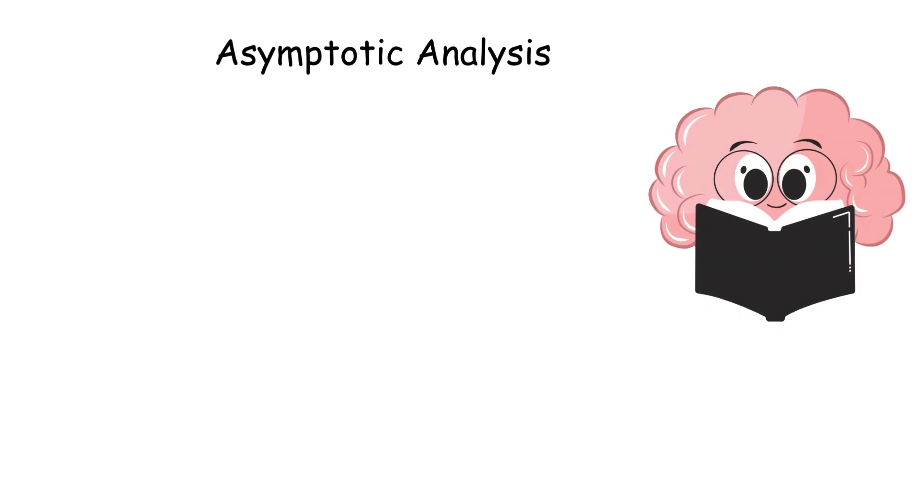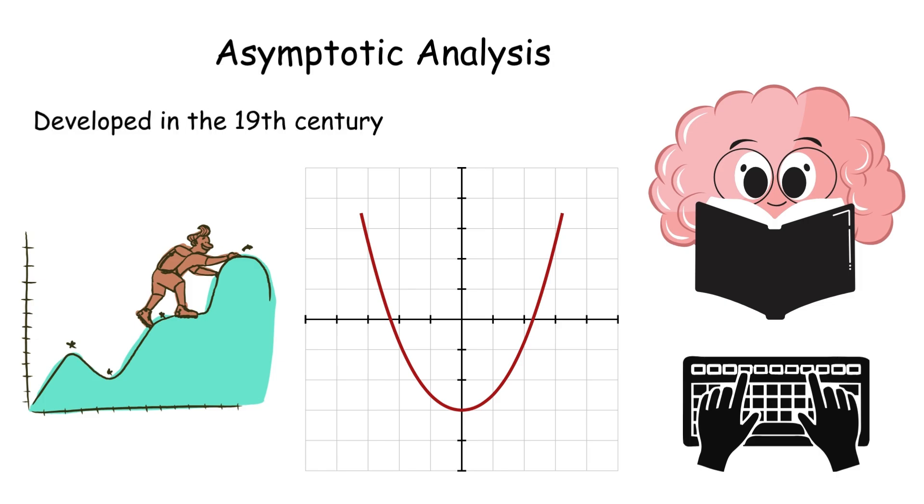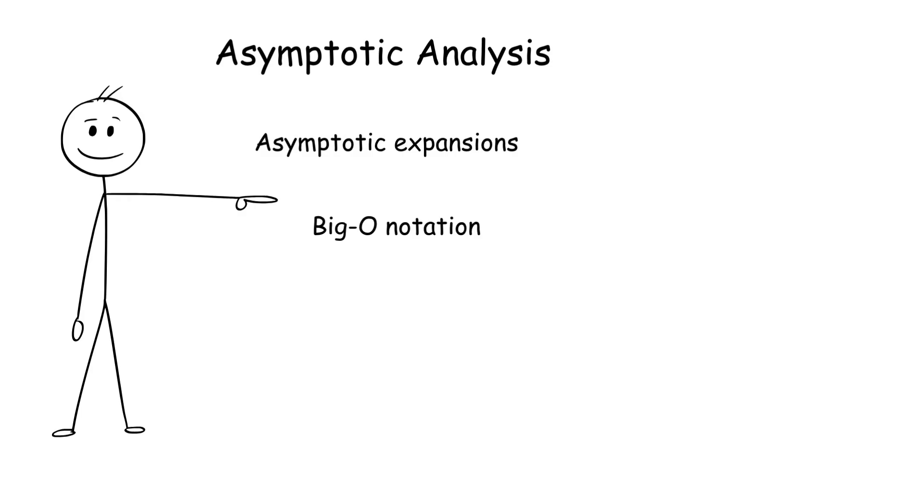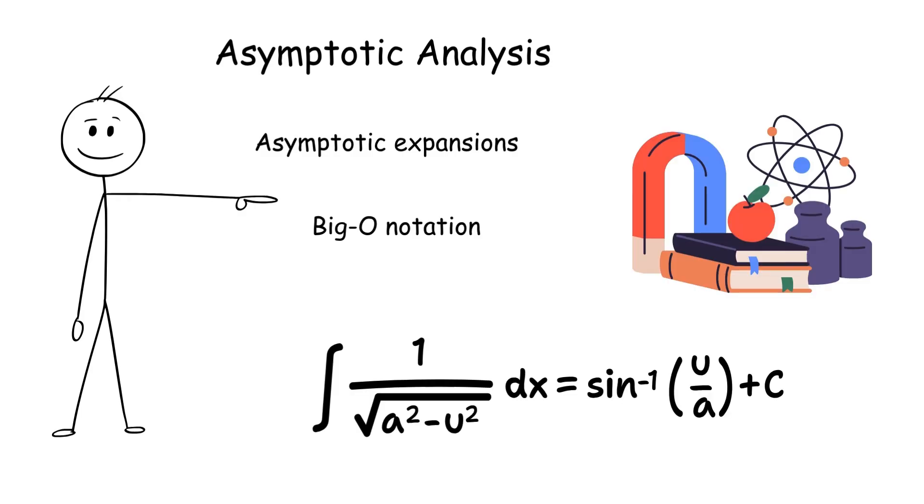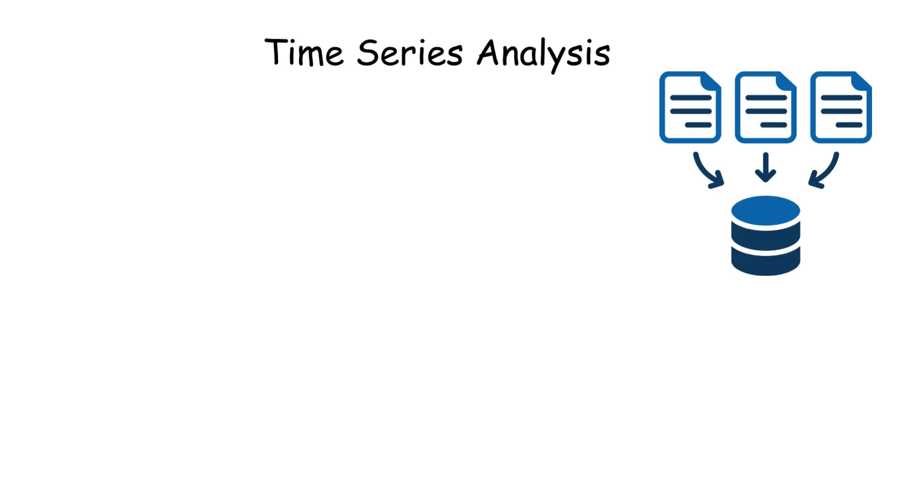Asymptotic analysis studies how functions behave as inputs grow large or approach limits. Developed in the 19th century, it uses tools like asymptotic expansions and big O notation. It's key in approximating integrals or solutions in physics and engineering. For example, Stirling's approximation estimates factorials for large numbers.